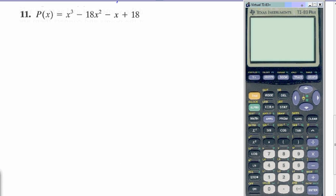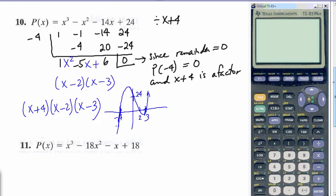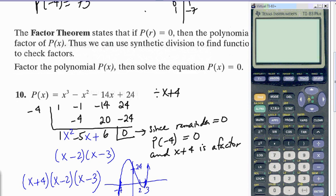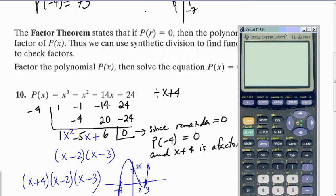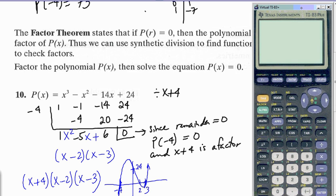For number 11, we are asked to factor. Use factor theorem to check to see if P of R is equal to 0, so then that means that X minus R is a factor of the polynomial.